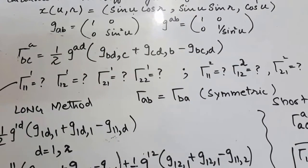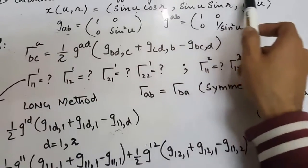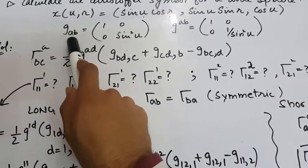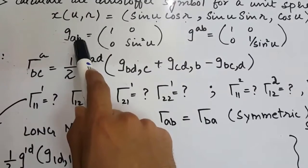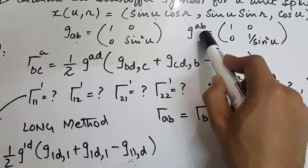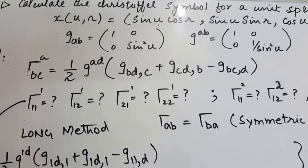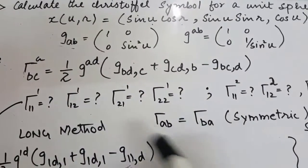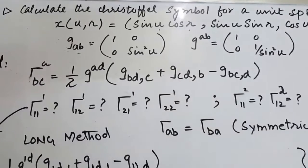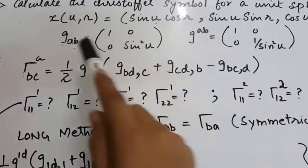Today I'm going to show you how we can calculate Christoffel symbols. The problem is to calculate Christoffel symbols for a unit sphere. I am given two matrices — the metric tensor entries. One is G_AB written in subscript, which is the covariant form, and the second is G^AB written in superscript, which is the contravariant form. G^AB is actually the inverse of G_AB, and these two matrices are very important in finding Christoffel symbols.